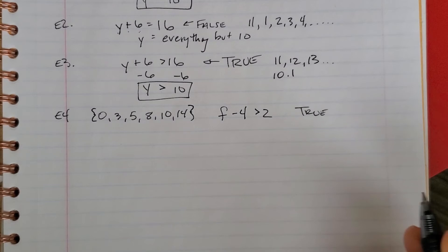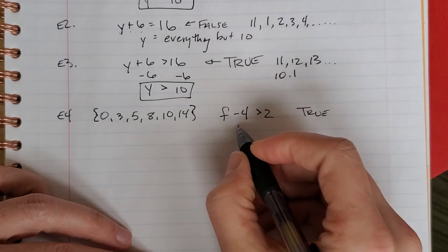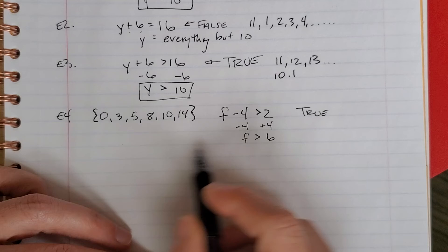So there's a couple ways to do this. You could solve this and do the inverse operations, which would be plus 4, and end up with f is greater than 6. Then just look for any of these numbers that are greater than 6.